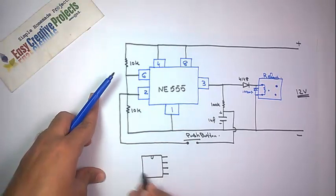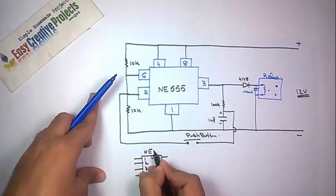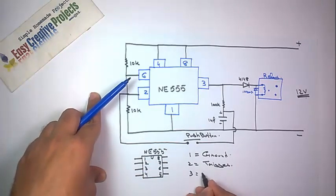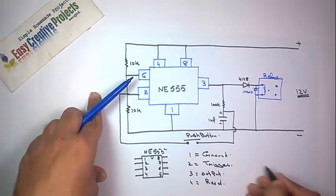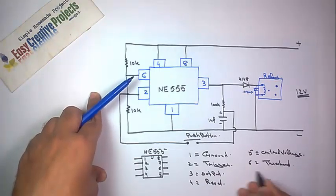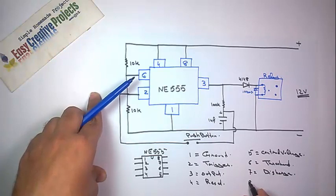The NE555 IC has 8 pins: first pin is ground, second is trigger, third is output, fourth is reset, fifth is control voltage, sixth is threshold, seventh is discharge, and eighth is power supply.